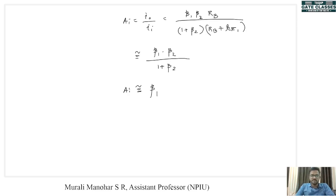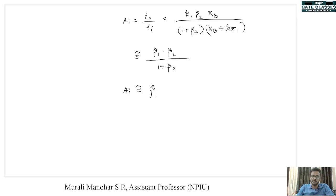Today we have seen different multistage amplifiers — cascade amplifiers as well as cascode amplifiers. We have seen why we need cascading and the advantages of a cascode amplifier. With that I am winding up the lecture here. We will meet again with different multistage amplifiers. Until then, bye.